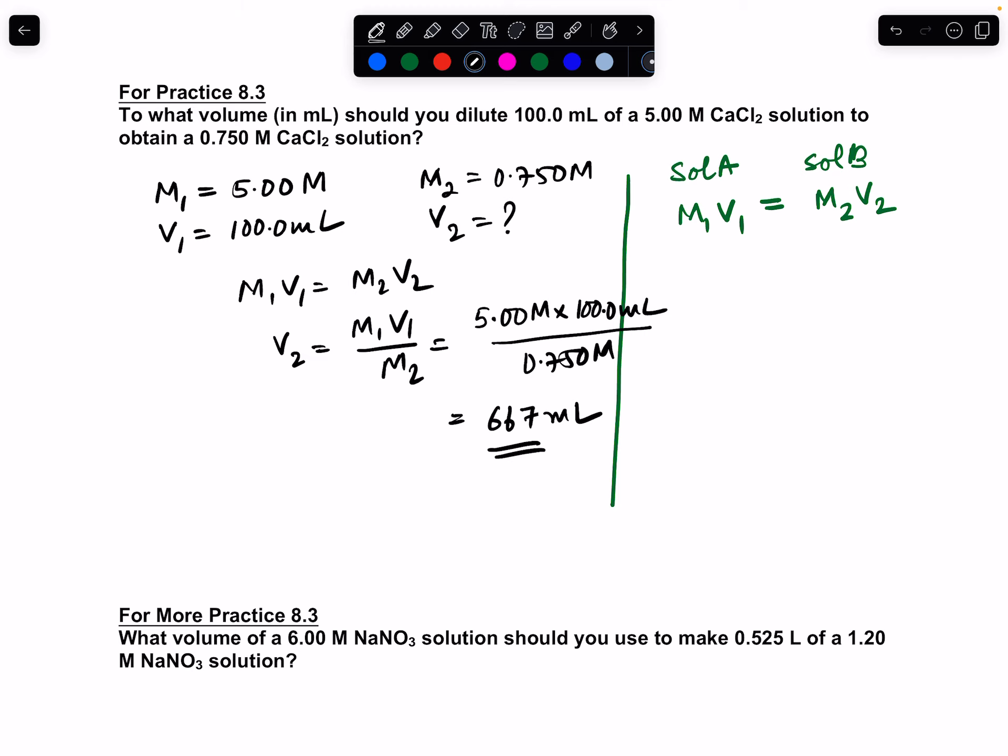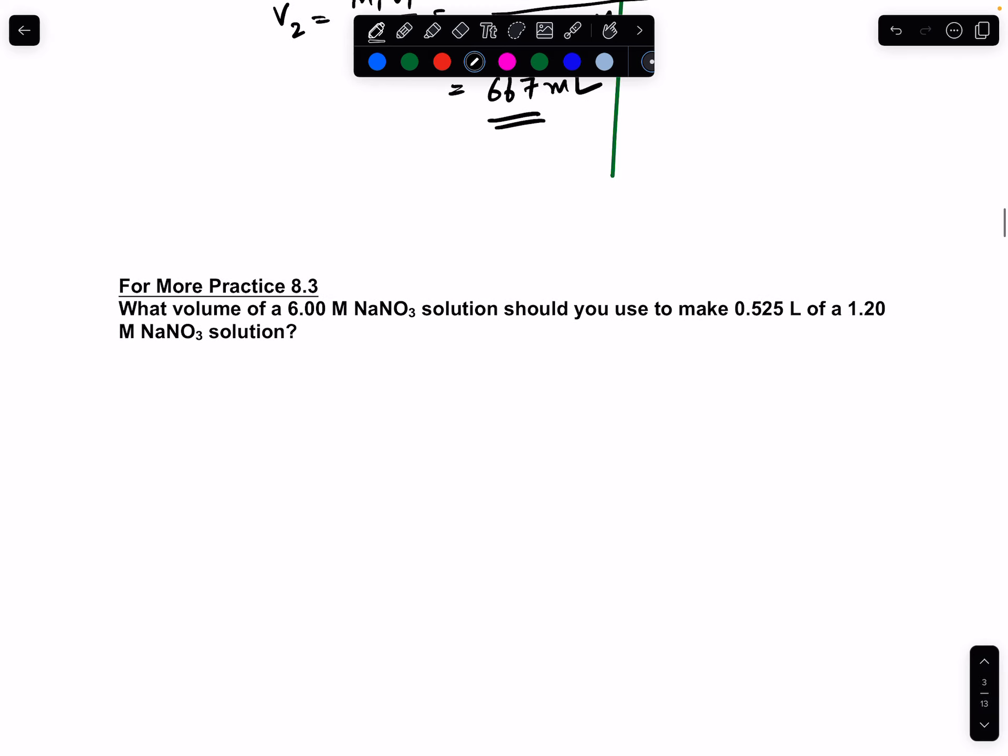Let's do another one, similar logic. M1 equals 6.00 molar, that's the NaNO3. We don't know what the volume corresponds to, that's what the question is asking us, so V1 equals question mark. M2 is 1.20 molar, and V2 is 0.525 liters.